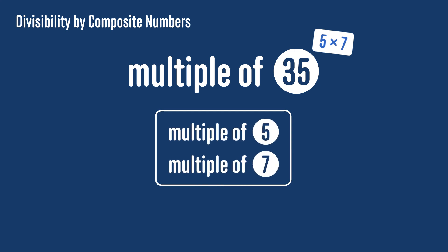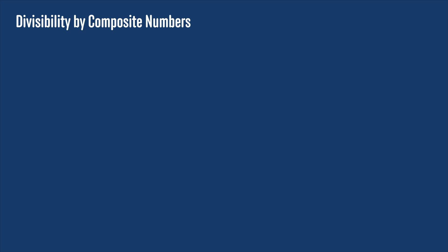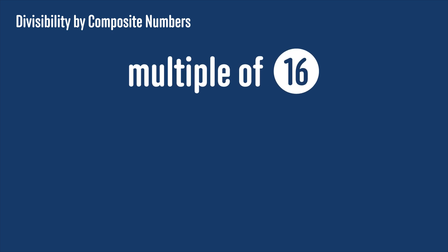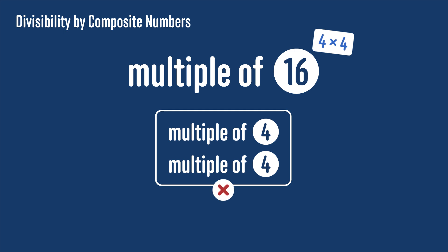That works for 35, but it doesn't always work like this. Let's say I was checking for divisibility by 16. 16 is 4 times 4, but I can't just check if a number is divisible by 4, otherwise we'd be concluding that all multiples of 4 are also multiples of 16.